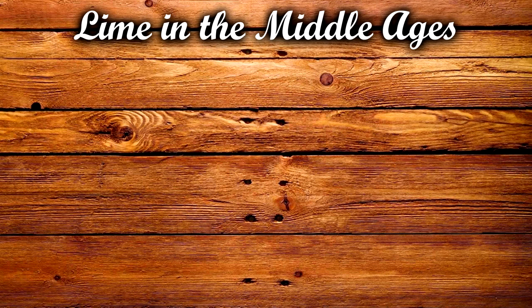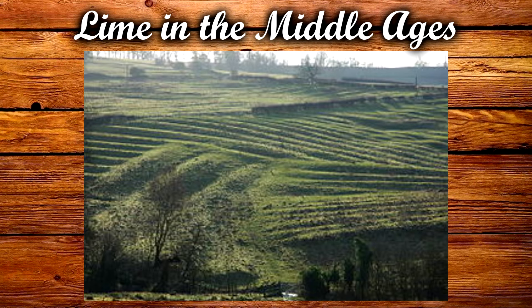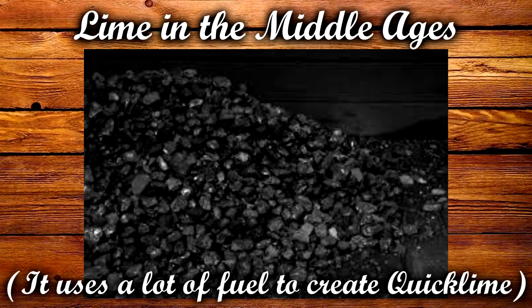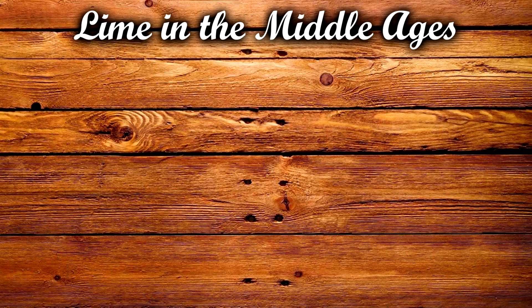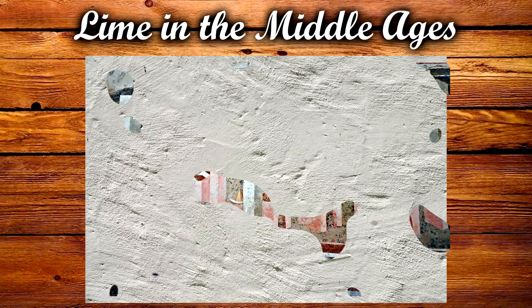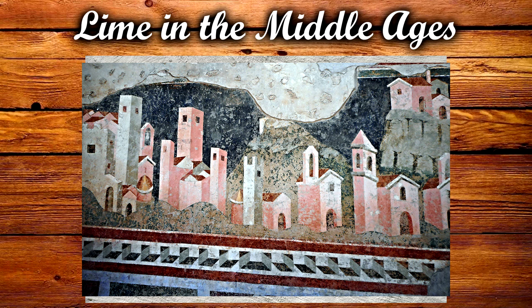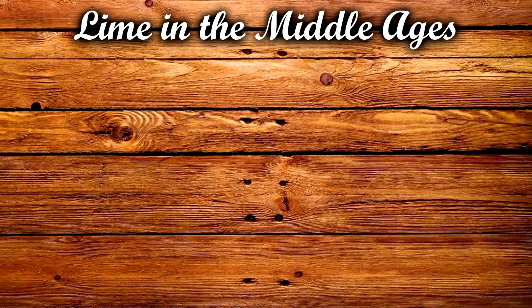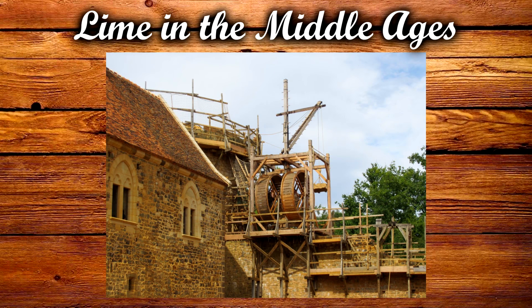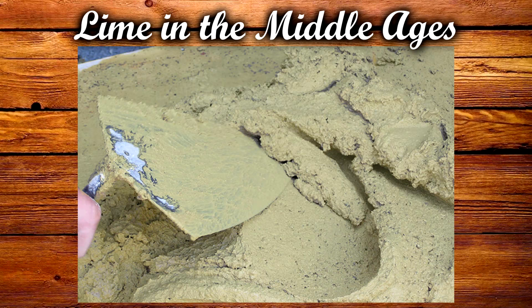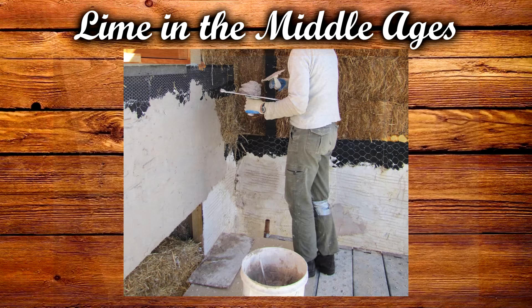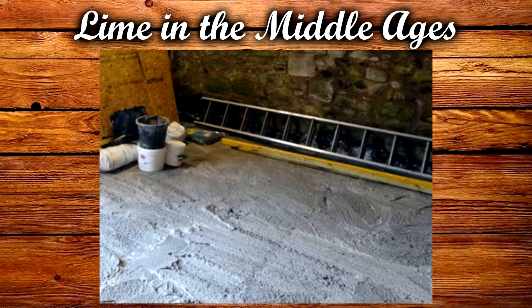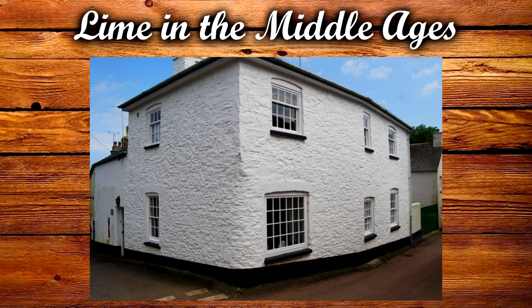In medieval Europe, agricultural use of lime only became widely possible when coal mining became cheaper in the late 13th century. Lime was also widely used throughout Europe in the form of plaster and paint, and it served as a principal building material in construction. Uses include lime mortar, lime plaster, lime render, lime ash floors, whitewashing, and so on.